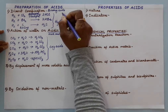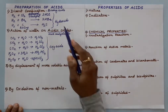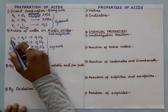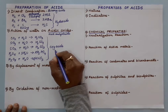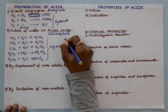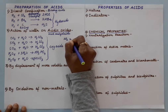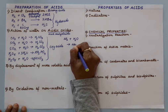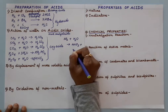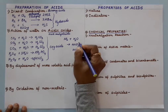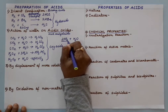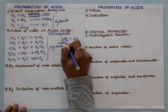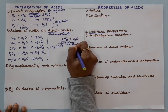Hydro acids do not contain oxygen, and oxy acids contain oxygen. All these acidic oxides are known as acid anhydride. One more example: nitrogen dioxide when it dissolves in water, it will form two acids — HNO₃ and HNO₂. That is why we call this a mixed acid anhydride.